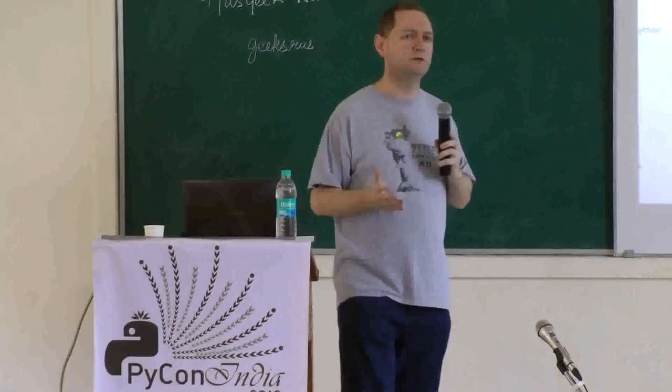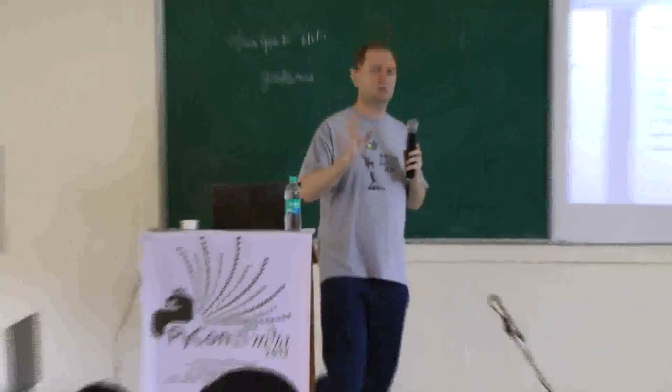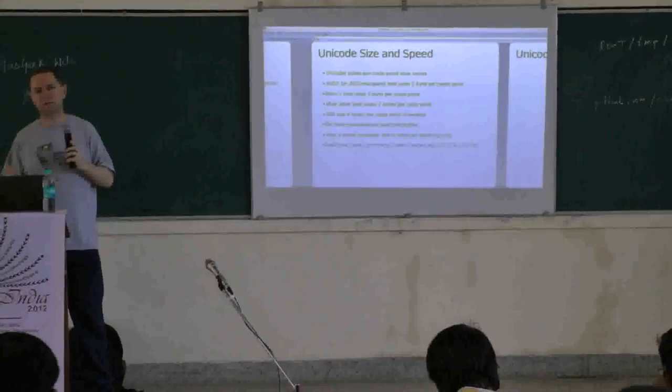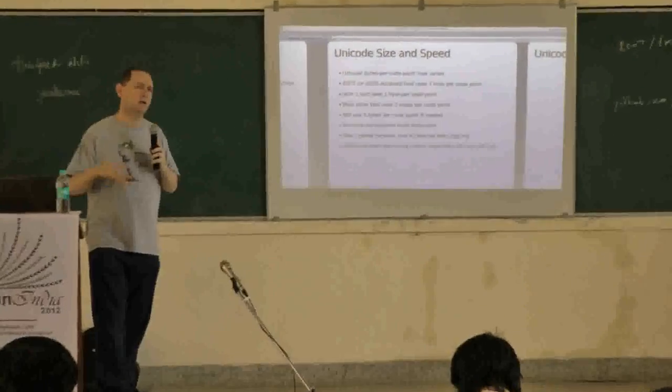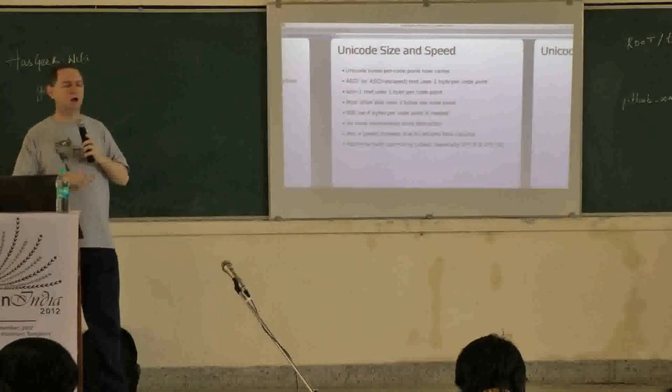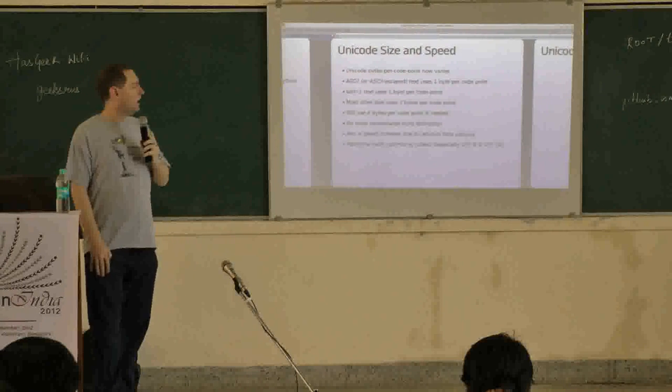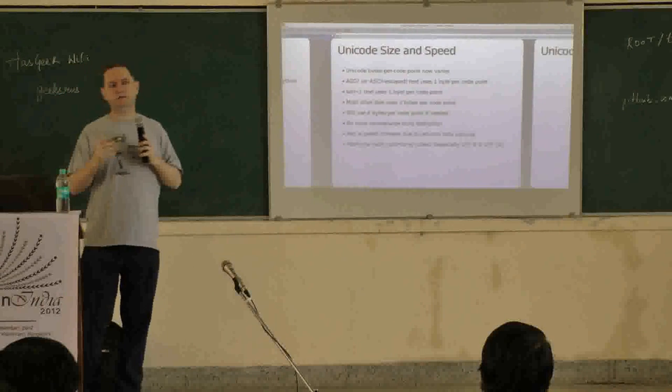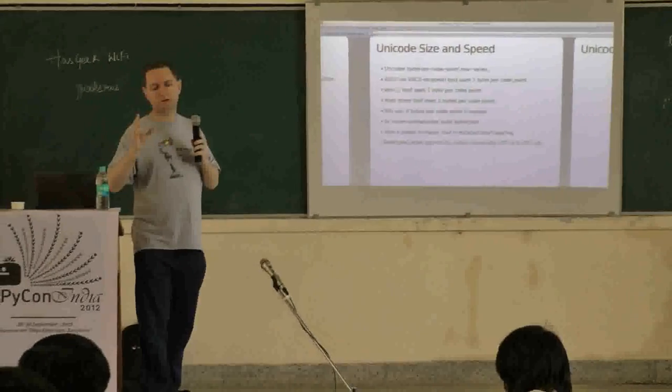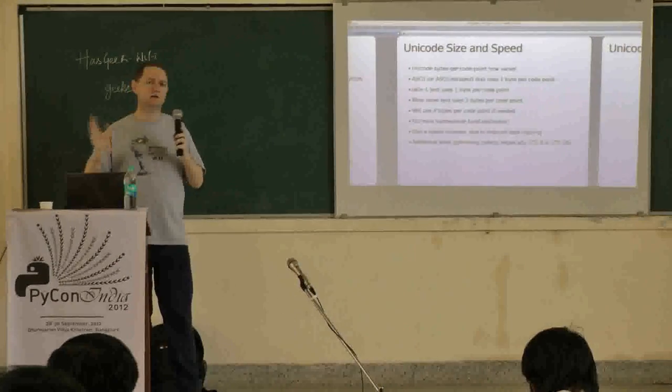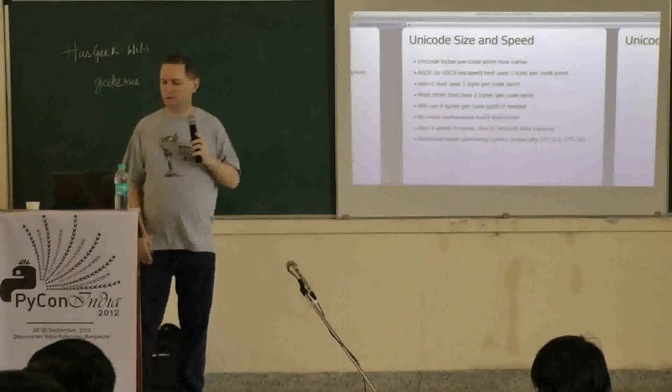Martin von Löwis and several others went through in Python 3.3 and implemented a version of strings that sizes the bytes per code point appropriately based on the Unicode characters stored in that string. If it's ASCII or ASCII compatible, then it only needs one byte per code point. If it's Latin-1, again, one byte per code point. Almost everything else will fit in two bytes per code point. But if it does come across a string where that won't work, that particular string will be made bigger. You still get regular memory access from the C side.